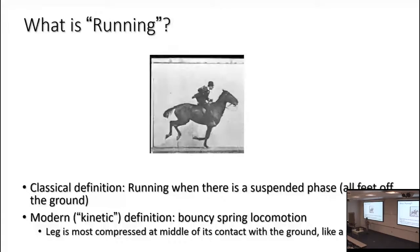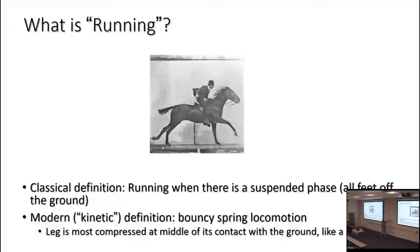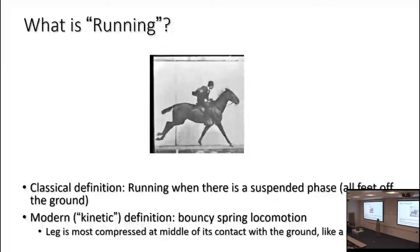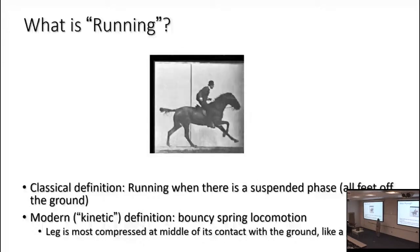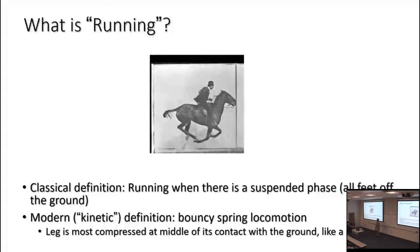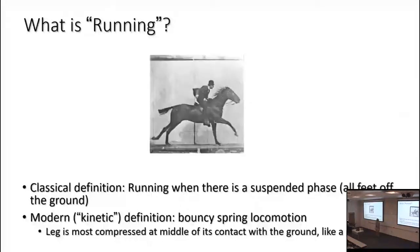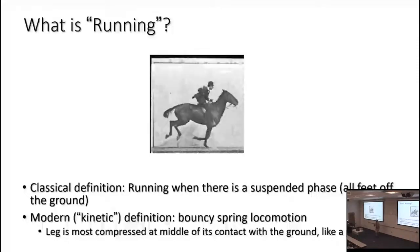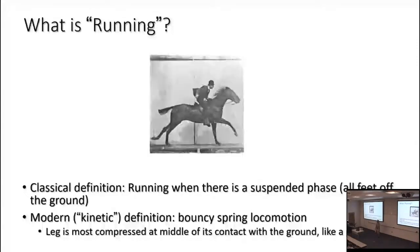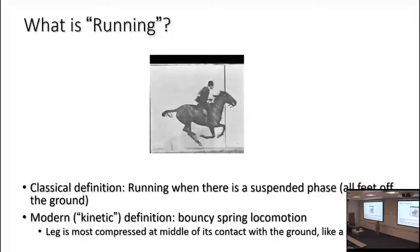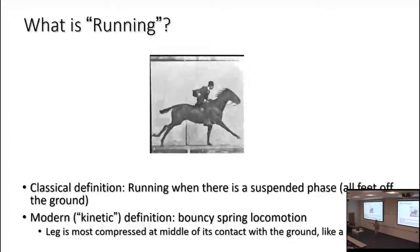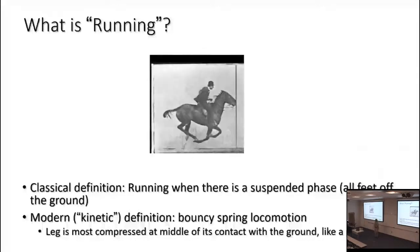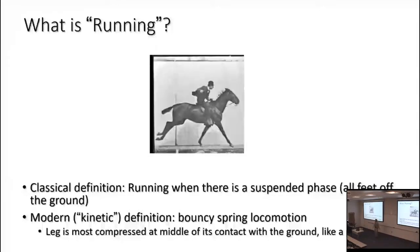If you want to test this yourself, you can do it at home: if you're walking, at the middle of the step cycle your head is no lower than any other time. But when you're running, even super slow running, you're at your lowest at the middle of the step cycle. So compliant, bouncy locomotion is running; non-compliant locomotion is walking.